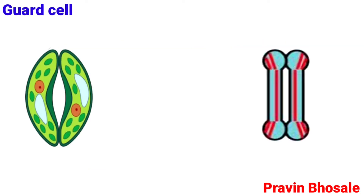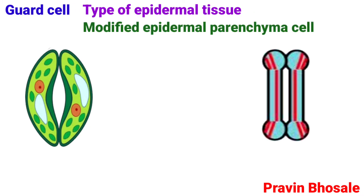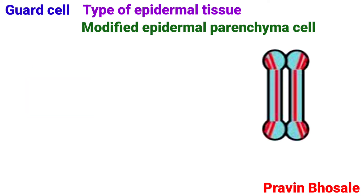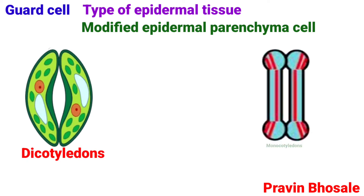Guard cells are a type of epidermal tissue which may be called modified epidermal parenchyma cells. They are kidney-shaped in dicotyledons and dumbbell-shaped in monocotyledons.